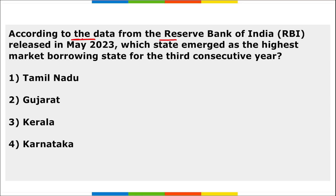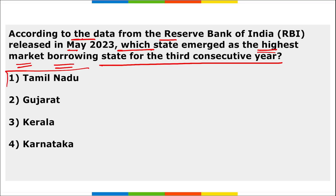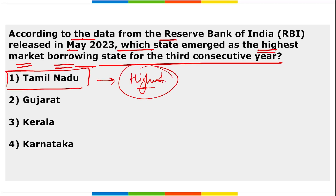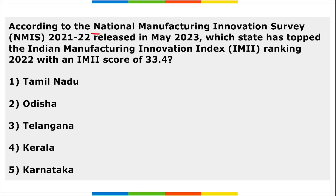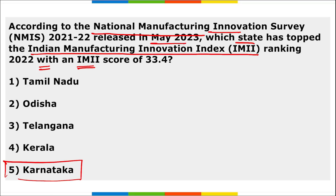According to RBI data released in May, Tamil Nadu emerged as the highest market borrowing state for the third consecutive year, with loans at around 68,000 crore rupees. According to the National Manufacturing Innovation Survey, Karnataka topped the Indian Manufacturing Innovation Index (IMII) ranking 2022 with an IMII score of 33.4.